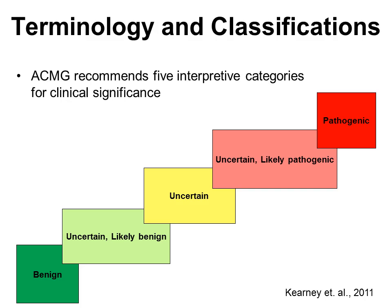ACMG recommends five interpretive categories for assigning clinical significance, starting with benign, working through three levels of uncertain classifications that include likely benign, uncertain, and likely pathogenic, and ending with a pathogenic classification. We will now touch on the qualities of a CNV that are considered when classifying CNVs into one of these five categories. Each of these pieces of information is used to assemble an overall idea of how likely a CNV is to be causing a patient's abnormal development or clinical features.